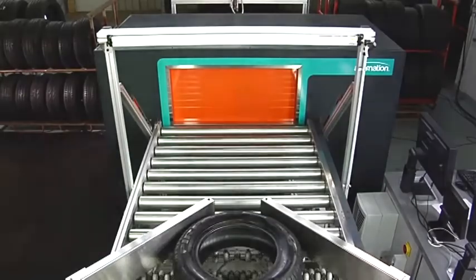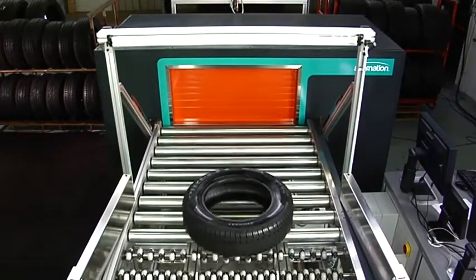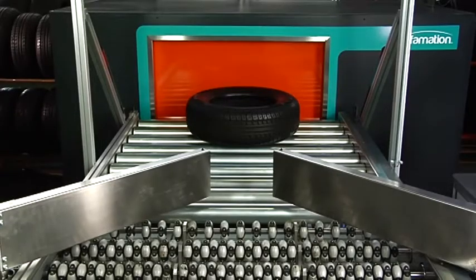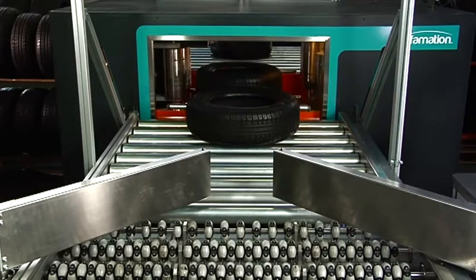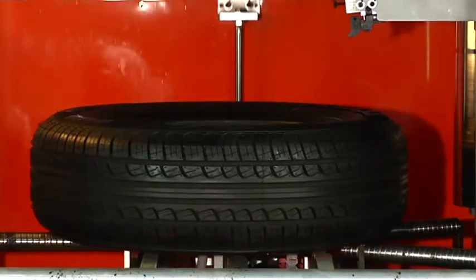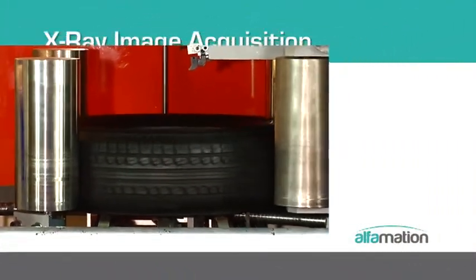During inline operation, each tire is centered and measured using high-precision light barrier sensors. The tire can be identified with an optional automated barcode reader, and the recipe is automatically selected. The tire is grabbed by four vertical rolls, and the recipe sets the rotation speed and other parameters.